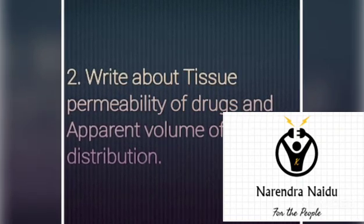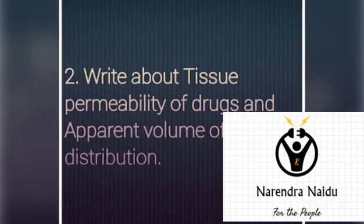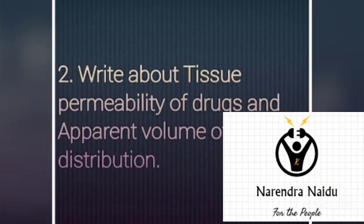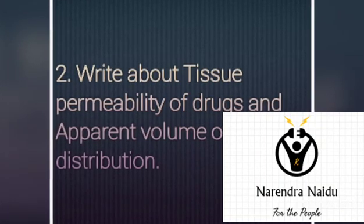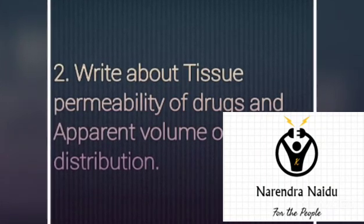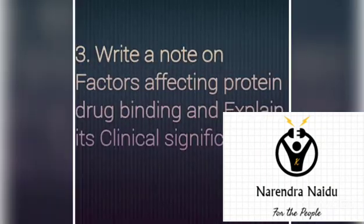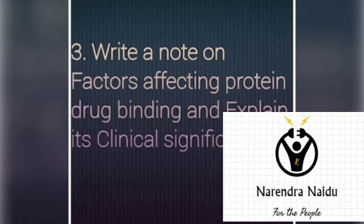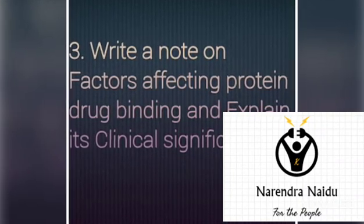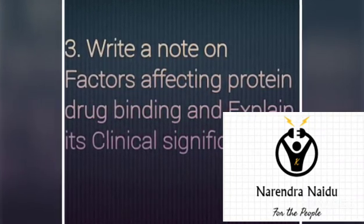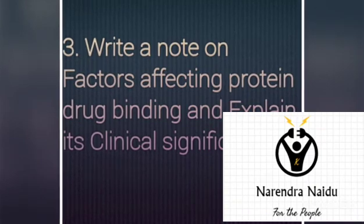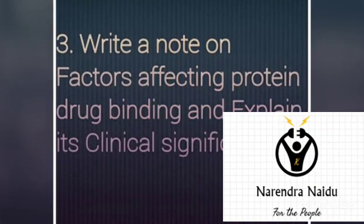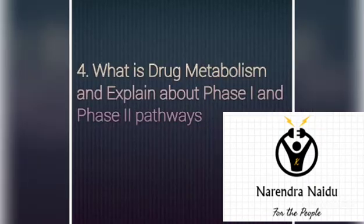The second question is: write about tissue permeability of drugs and apparent volume of drug distribution. This is also one of the important questions. The third question is: write a note on factors affecting protein-drug binding and explain its clinical significance — you have to write the factors and also its clinical significance.